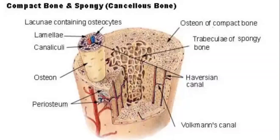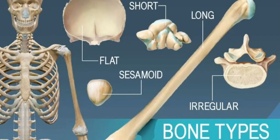Types of Bones: The five principal types of bones are long, short, flat, irregular, and sesamoid.